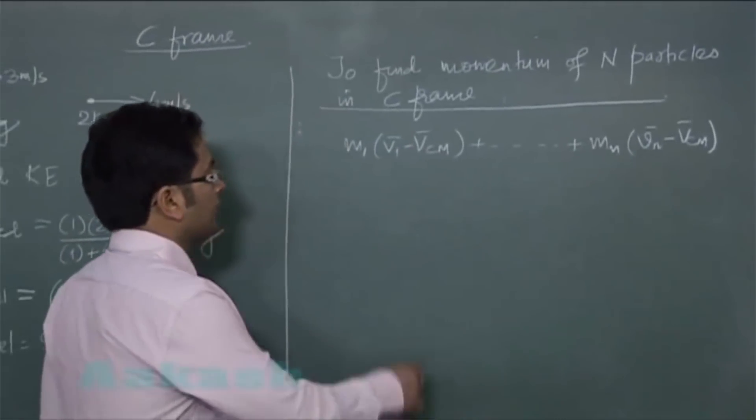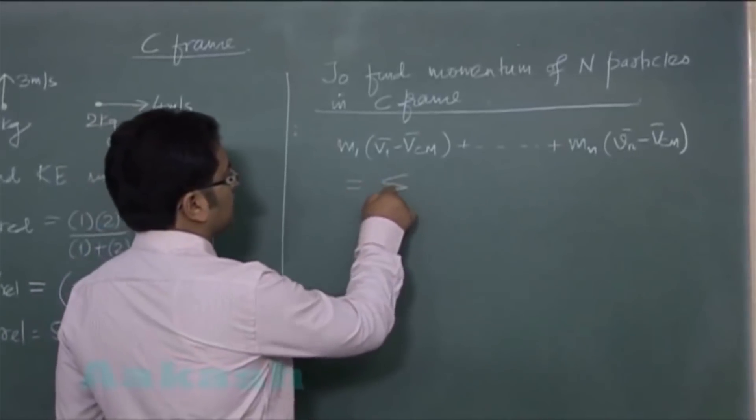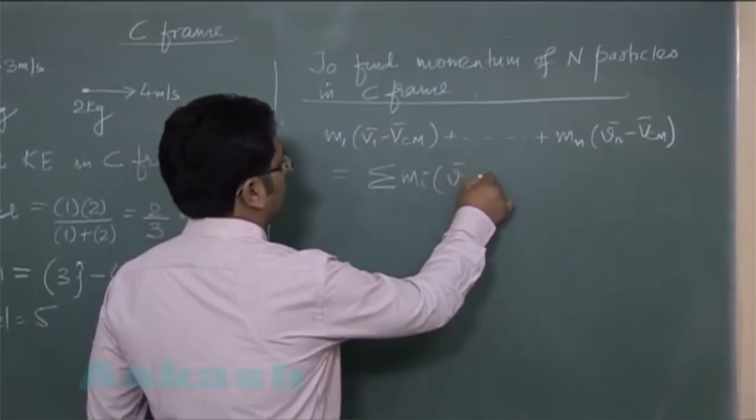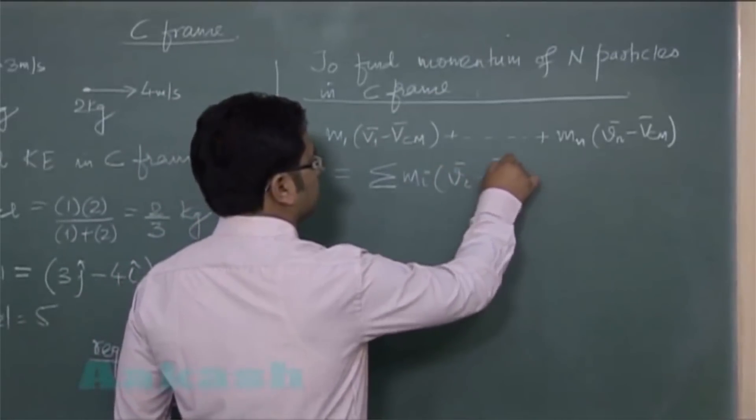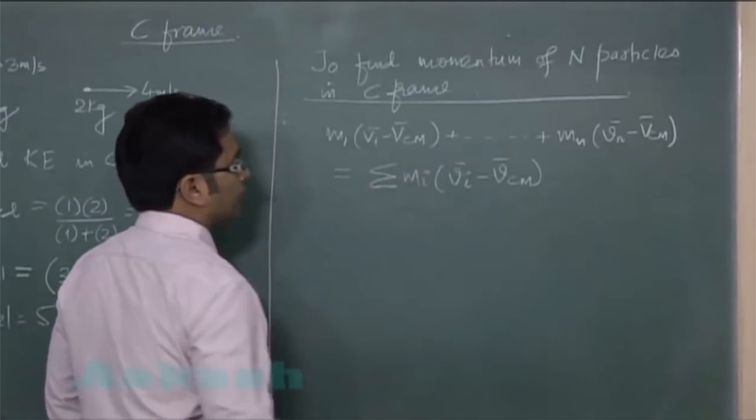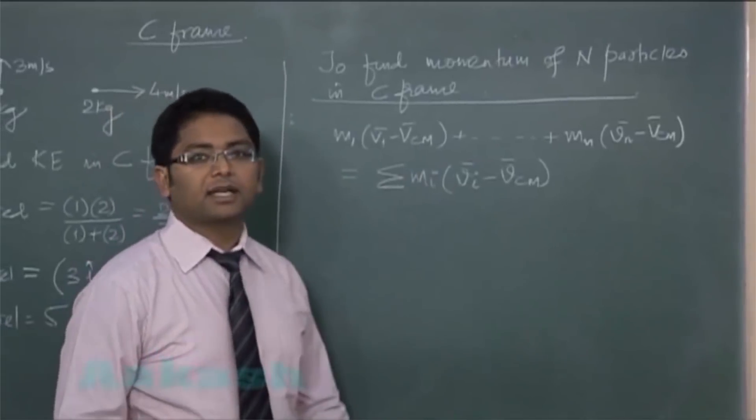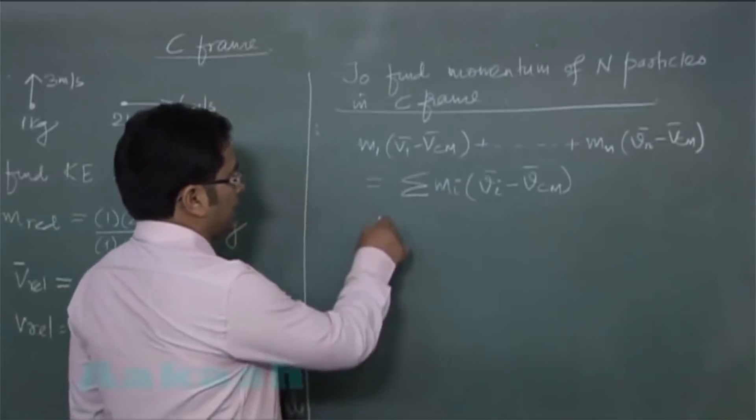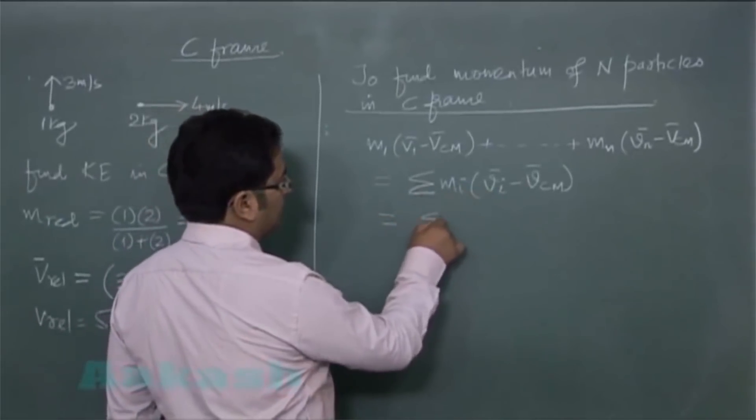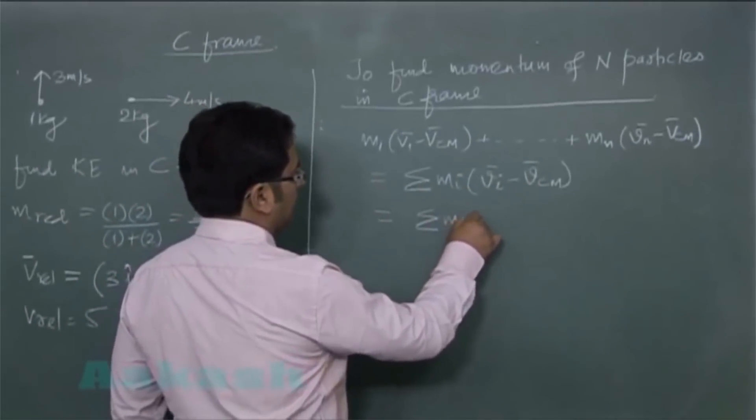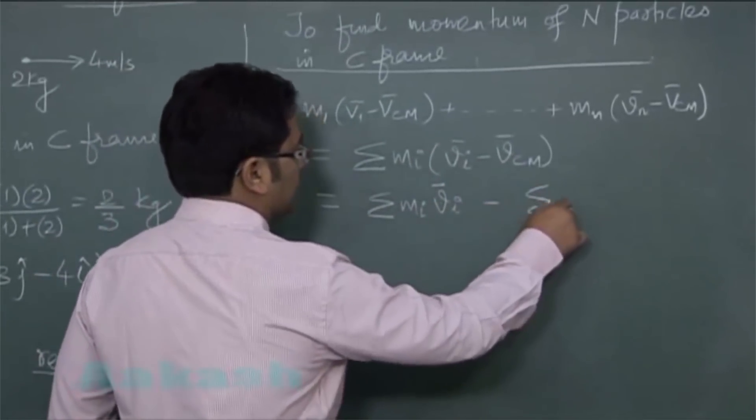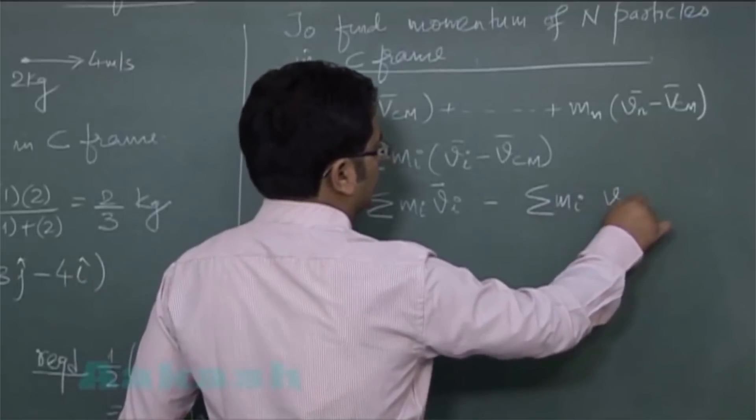Let's try to add them now. This will be summation MI VI minus VCM. So this is momentum of N particles in C frame. Let me split it: Sigma MI VI minus Sigma MI VCM.